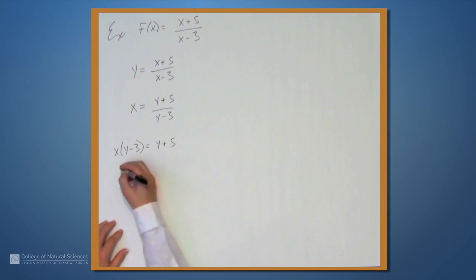Let's distribute out this left-hand side. We'll get xy minus 3x equals y plus 5.